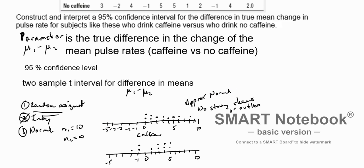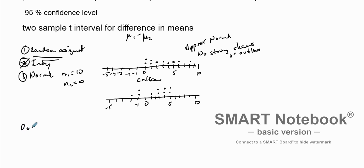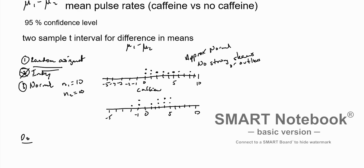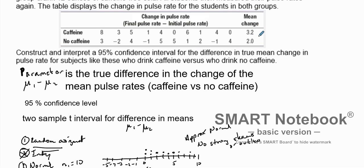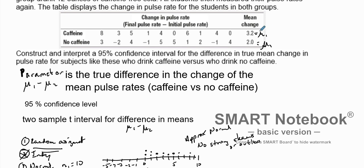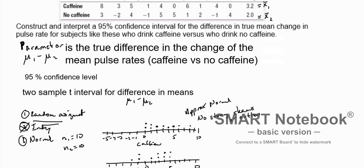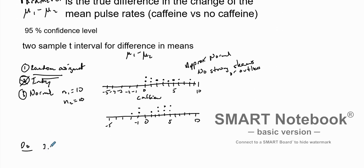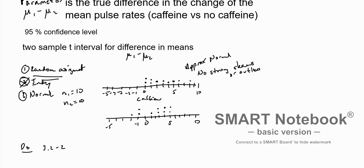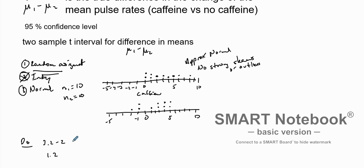From here we're going to go to the do phase. We need to figure out the mean of each group. We're going to find our statistic. We're going to take mean one minus mean two: 3.2 minus 2.0, which equals 1.2. Now we're going to add and subtract our critical value — our t value. Our degrees of freedom since we have 10 in both groups: 10 minus 1 equals 9. So we're going to have degrees of freedom of 9.